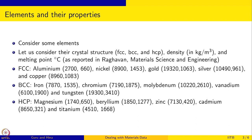The data is on some elements. It consists of their crystal structure, density and melting point. We have about 15 elements — 5 FCC, 5 BCC, and 5 HCP — and this is the data set that we have been working with for the past few sessions.